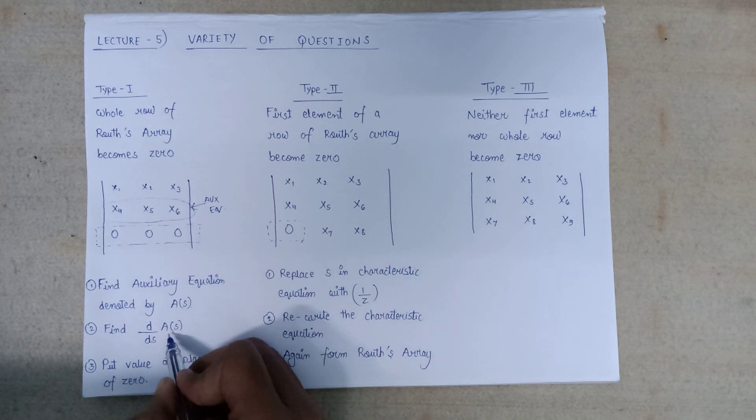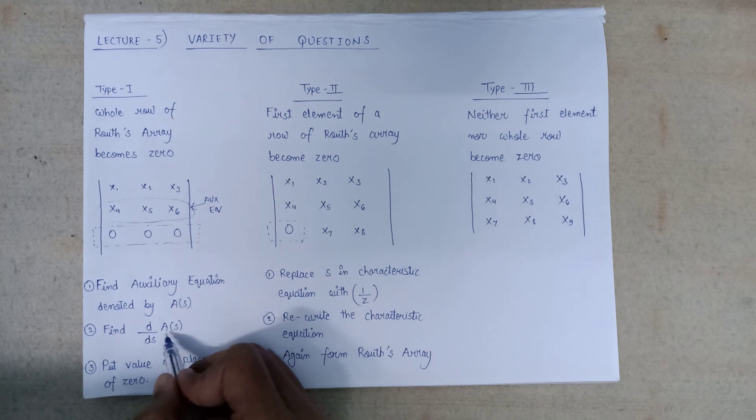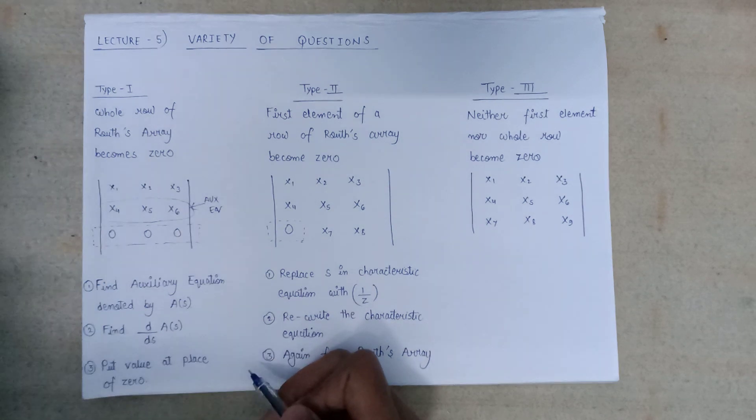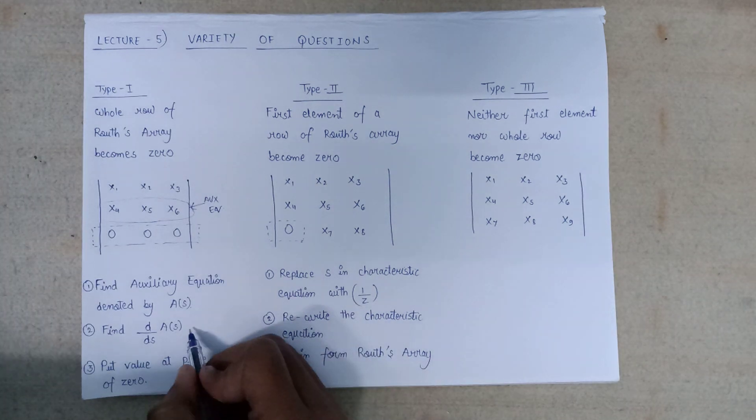In the second step, we will find the differentiation of the auxiliary equation, that is dA(s)/ds, where A(s) is the auxiliary equation and d/ds represents its differentiation. After that, we are going to get the result from this differentiation, and we will get another equation as its output.